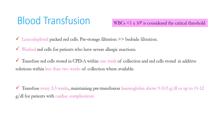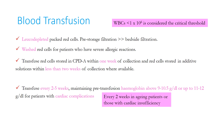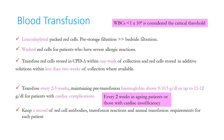Transfusion should be done every 2–5 weeks per TIF guidelines, maintaining pre-transfusion hemoglobin above 9–10.5 g/dL, or up to 11–12 g/dL for patients with cardiac compensation. Indian studies recommend transfusing every 3–4 weeks. Transfusion may be needed every 2 weeks in aging patients or those with cardiac insufficiency. One must keep records of red cell antibodies, transfusion reactions, and annual transfusion requirements to assess volume needed to maintain the desired pre-transfusion hemoglobin, aiming to keep post-transfusion hemoglobin below 14–15 g/dL.